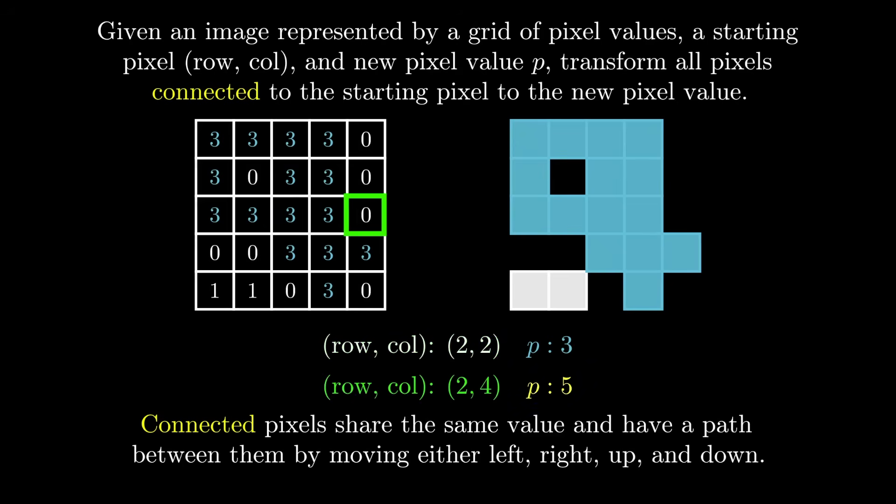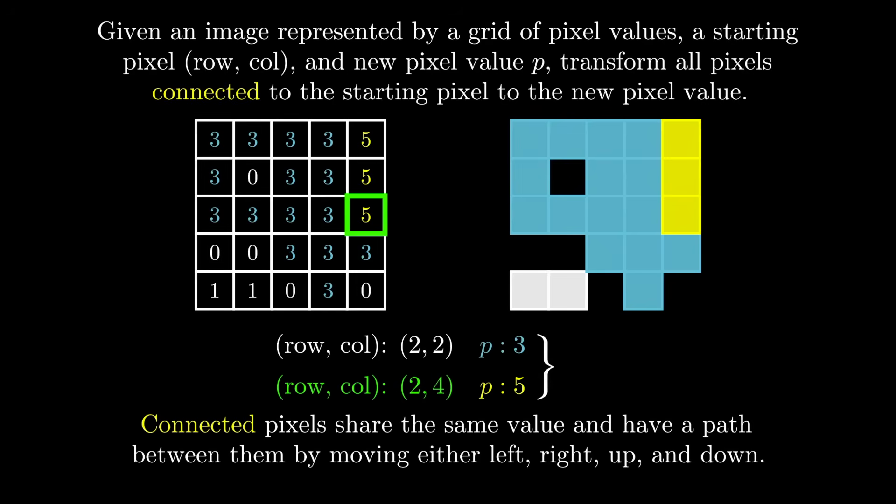Here's another example to further clarify. If we choose the starting pixel to be row 2 and column 4 with pixel value 5 representing the color yellow, this is what the transform image looks like. For those of you who have ever used a paint application like Microsoft Paint, this is essentially what the bucket tool does to fill a section of your painting or drawing with a new color.